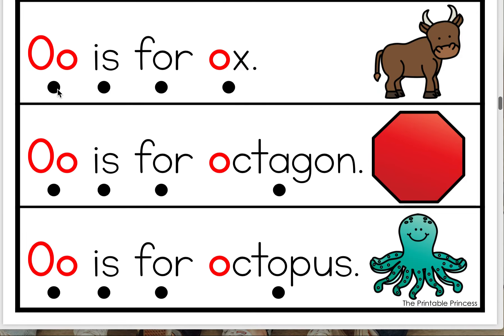AH is for ox. Let's do it together — AH is for ox. Great job, friends. We know what shape this is — AH is for octagon. Let's do it together — AH is for octagon. Great work!